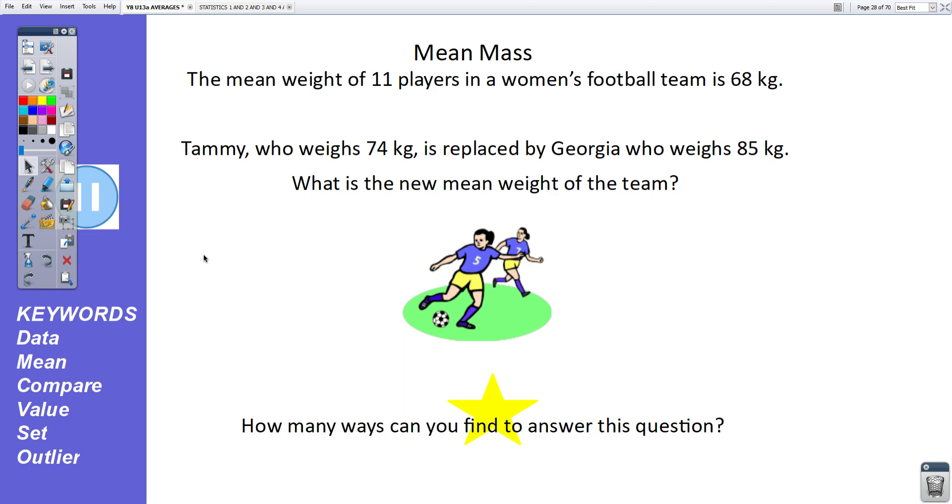Moving on. The mean weight of 11 players in a women's football team is 68 kilograms. Tammy, who weighs 74 kilograms, is replaced by Georgia, who weighs 85 kilograms. What is the new mean weight of the team? How many ways can you find to answer this question? I'll be happy if you can find one. I'll be even happier if you can find two. Pause the video, have a go, and unpause it when you're ready to mark your answers.